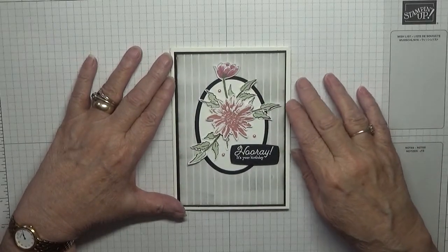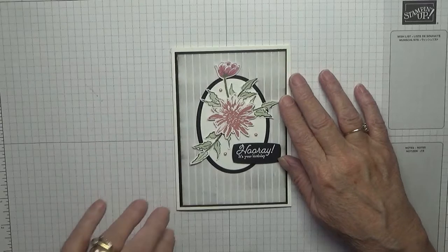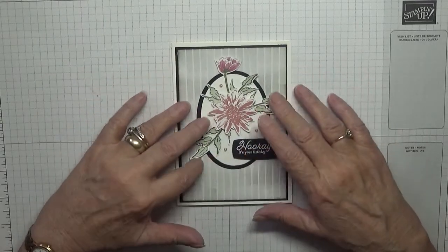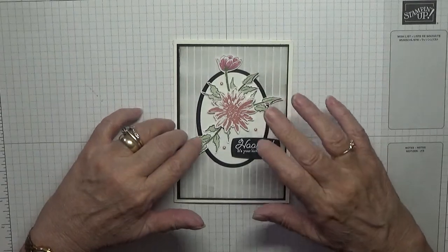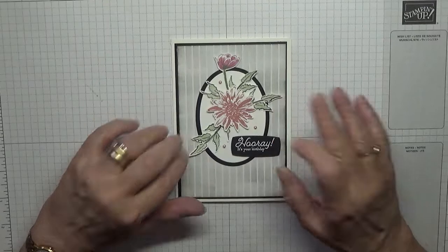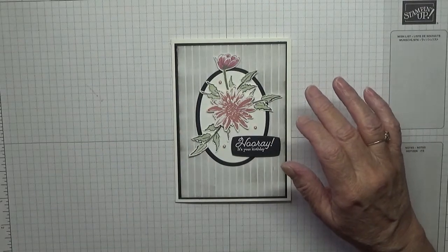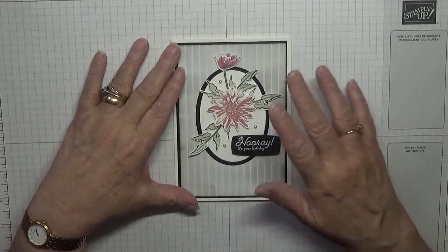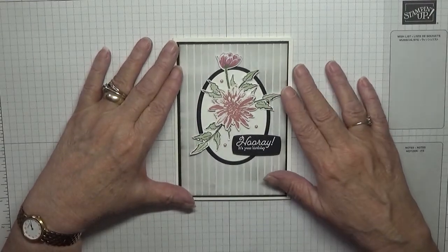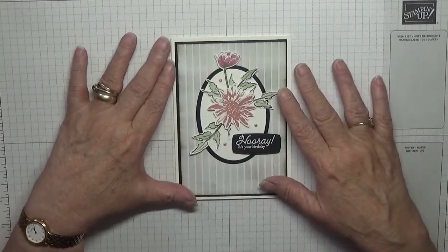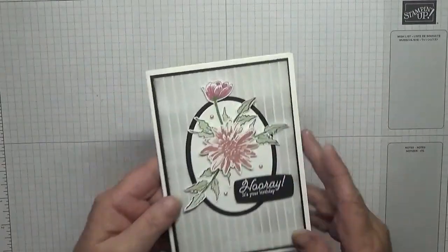Hello everybody, welcome to Georgie B's Card and Stuff. Today I'd like to show you how I made this card. I got the idea from this card from YouTube, it was a Gina K design. She used Gina K stuff and I liked it and I thought, how can I make that into a Stampin' Up card, and this is what I've come up with.